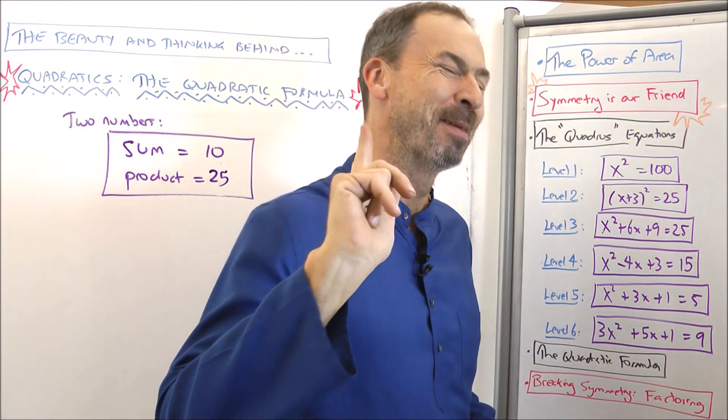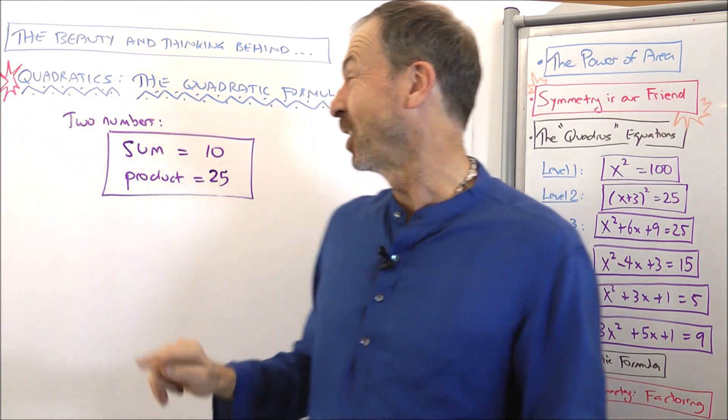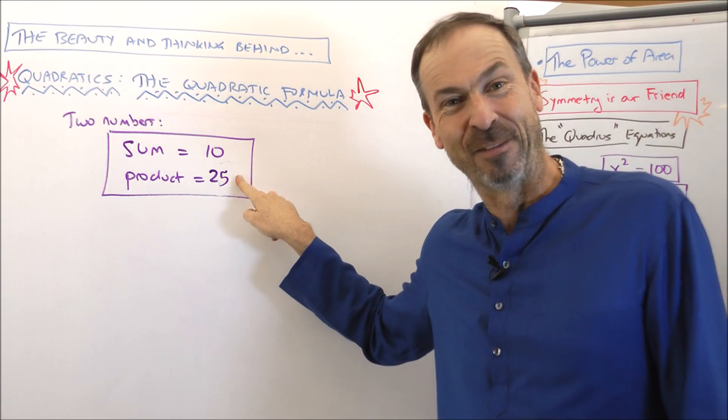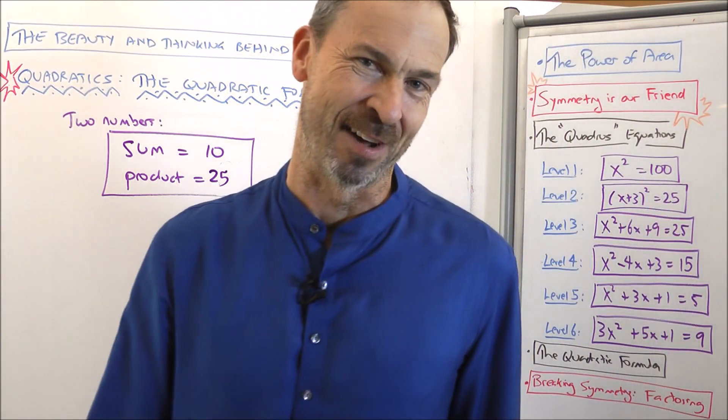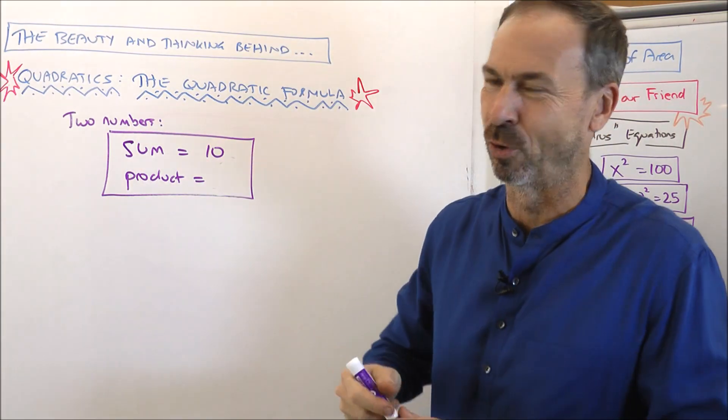All right, but that wasn't my puzzle. That wasn't my puzzle. There might have been a slight trick there, but that wasn't my trick. I'm actually wondering about two numbers that sum to 10 and have product 26.